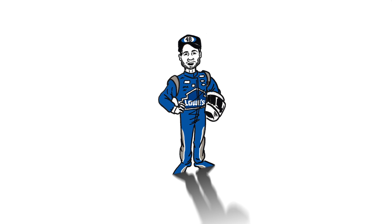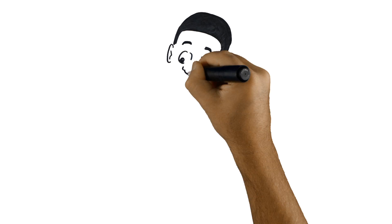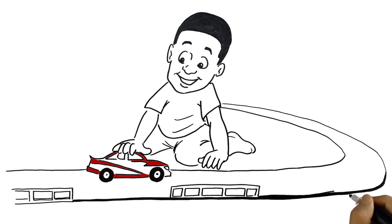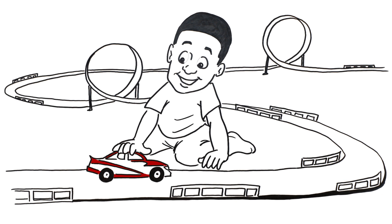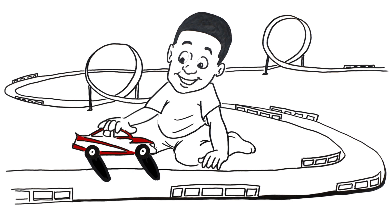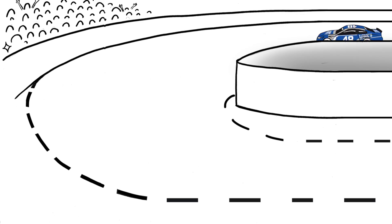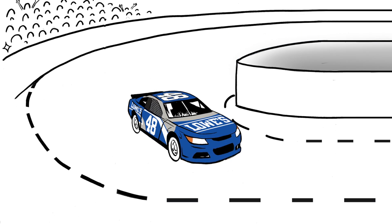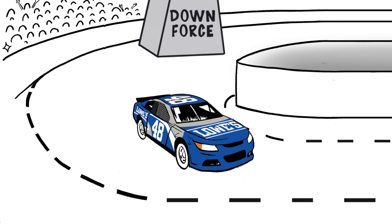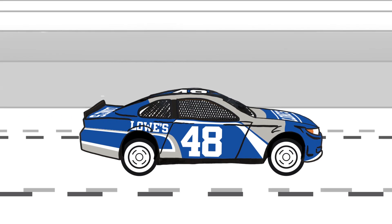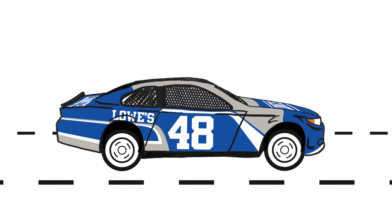Now let's talk about downforce. If there's one thing a driver always wants it's more grip. Grip is how the tires stick to the pavement. The more grip we have the less likely we are to spin out and the faster we can go. To get grip we want to push the tires into the track as much as we can. So how do we do that without adding more weight to the car? We'll use the science of aerodynamics to create downforce.